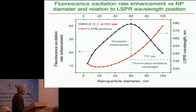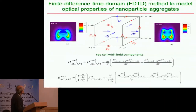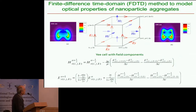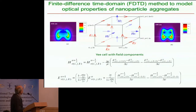Using Mie theory, we can calculate the enhancement of the electric field depending on the diameter and the wavelength of the irradiation. However, Mie theory can be applied only for spherical nanoparticles, but our goal was to develop nanochips with nanostructures of different forms. We were therefore forced to use another technique — another method — to calculate the optical properties of nanostructures with different forms.